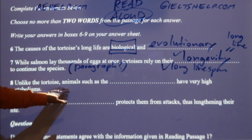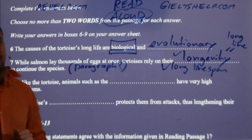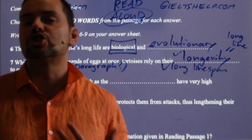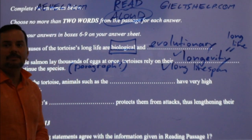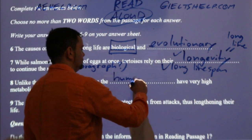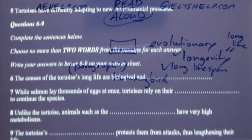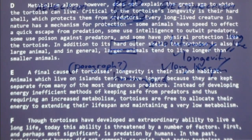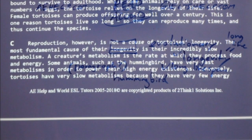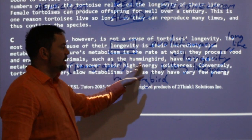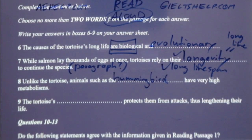Number eight: 'Unlike the tortoise, animals such as the something have very high metabolisms.' If you know the name of this animal when you read it, I'm sure you will remember. Doves says hummingbird — hummingbird, absolutely. That's going to be in the beginning of the passage. Here it is: hummingbird. One word.